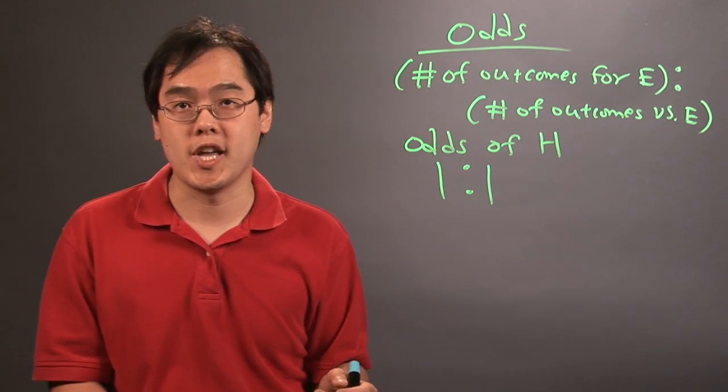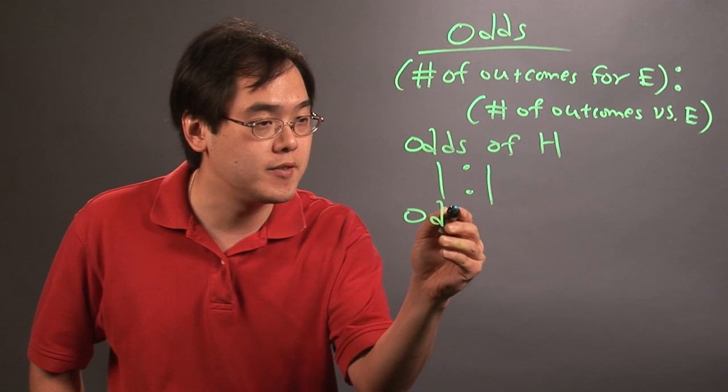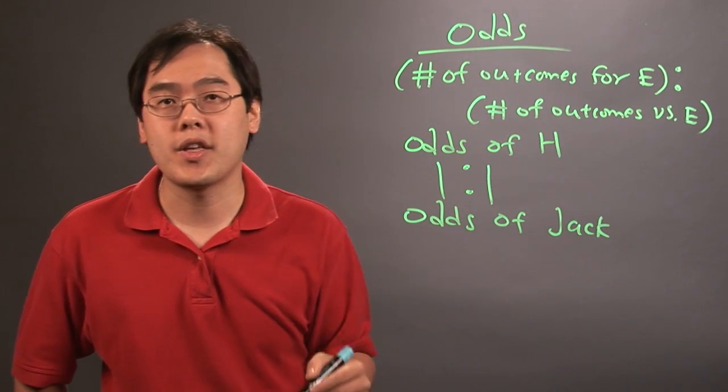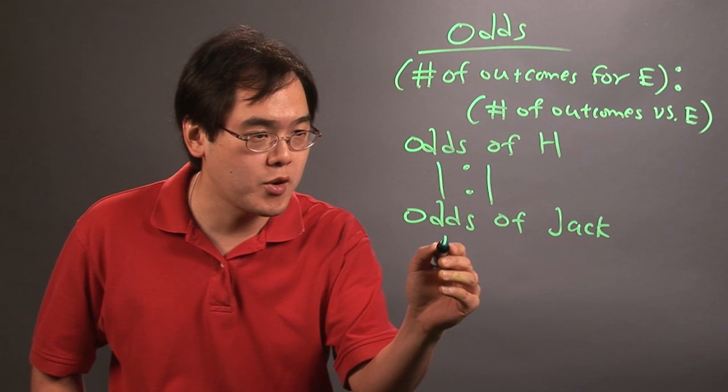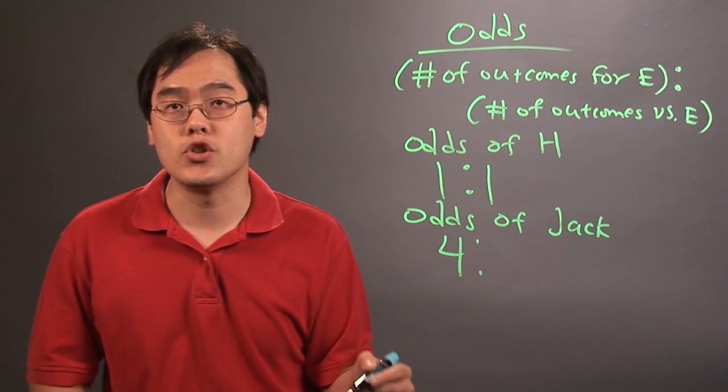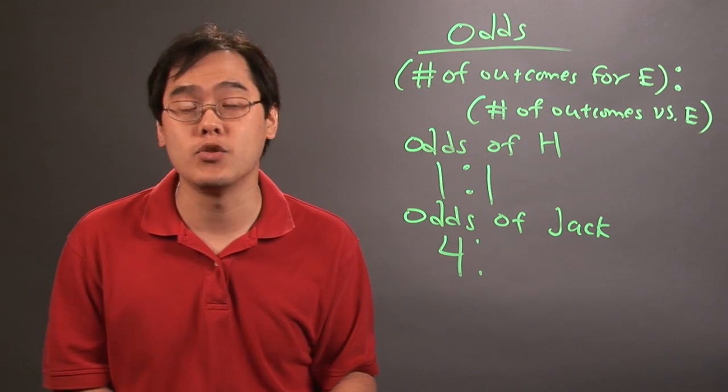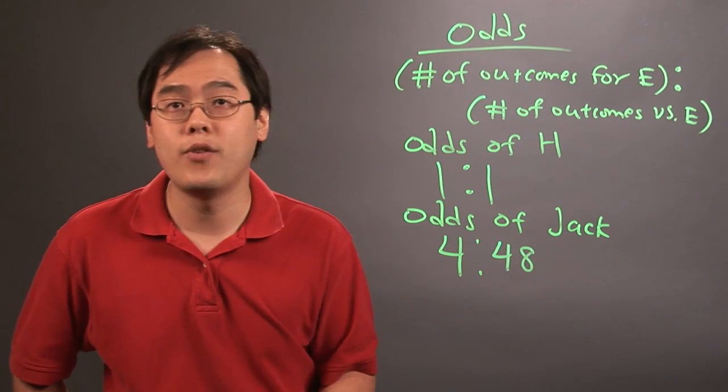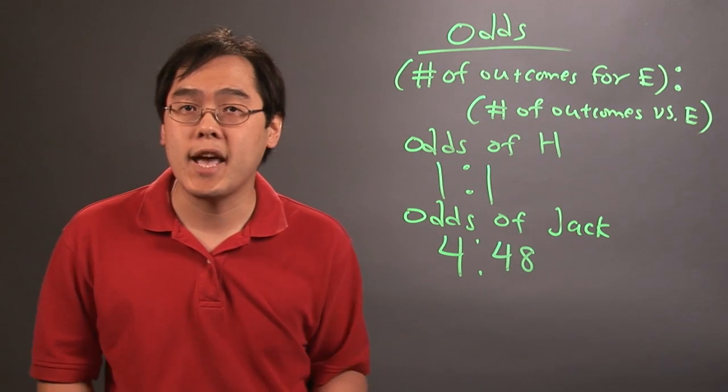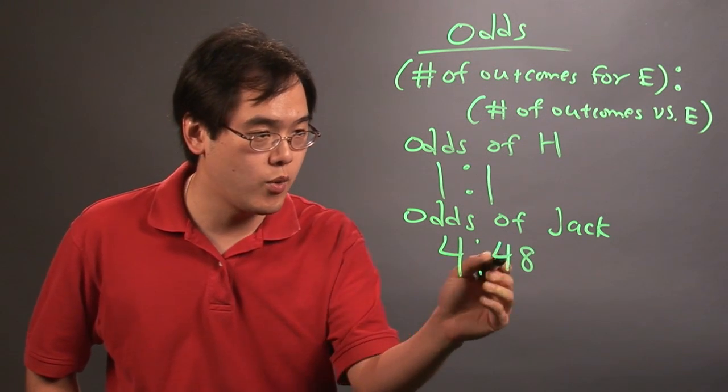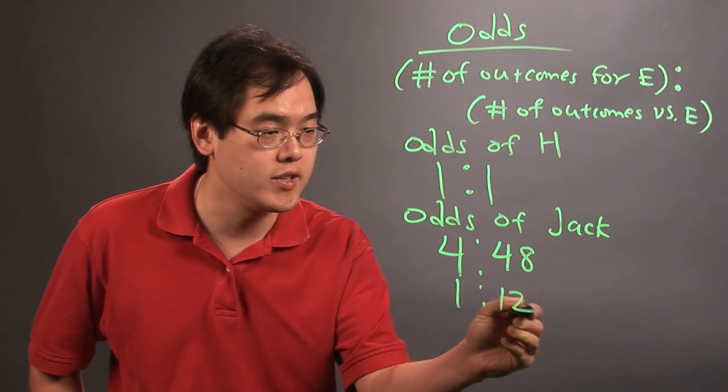Now, if you have cards, for example, and you want to find out the odds of drawing a jack, you want to think about how many ways can you draw a jack, and that's going to be four, and the number of ways you don't draw a jack would be 48 if you're talking about a 52-card deck, so the odds of getting a jack is 4 to 48. Now, odds can be reduced if you can reduce both numbers, and so 4 to 48 can be reduced as 1 to 12.